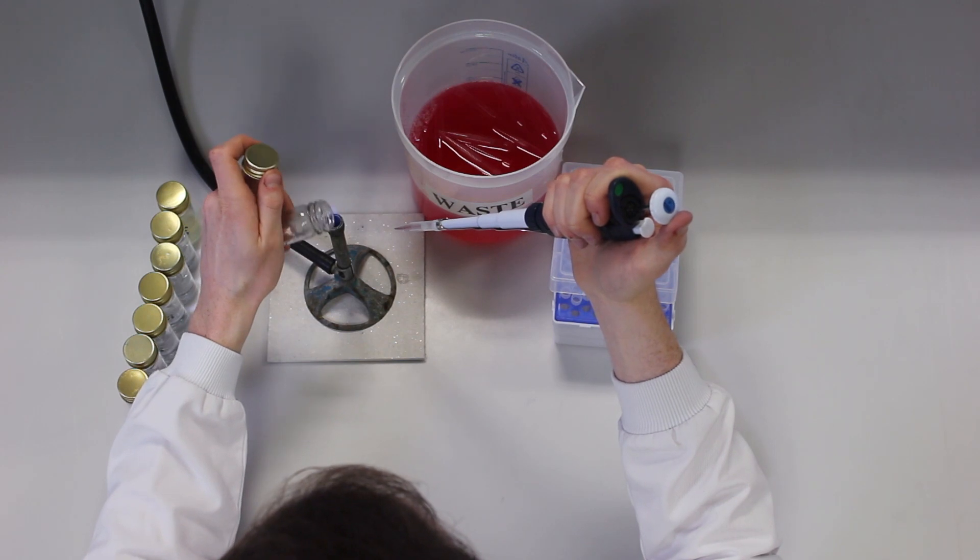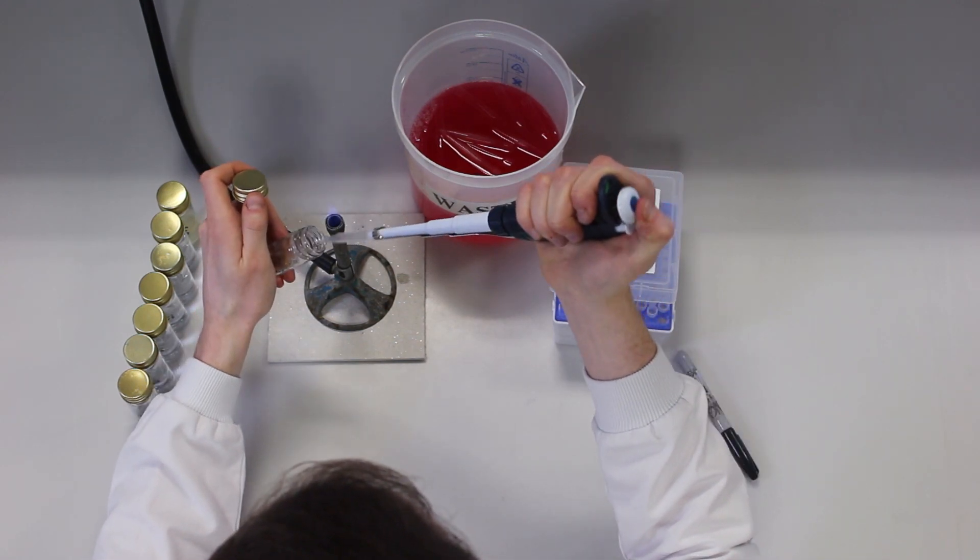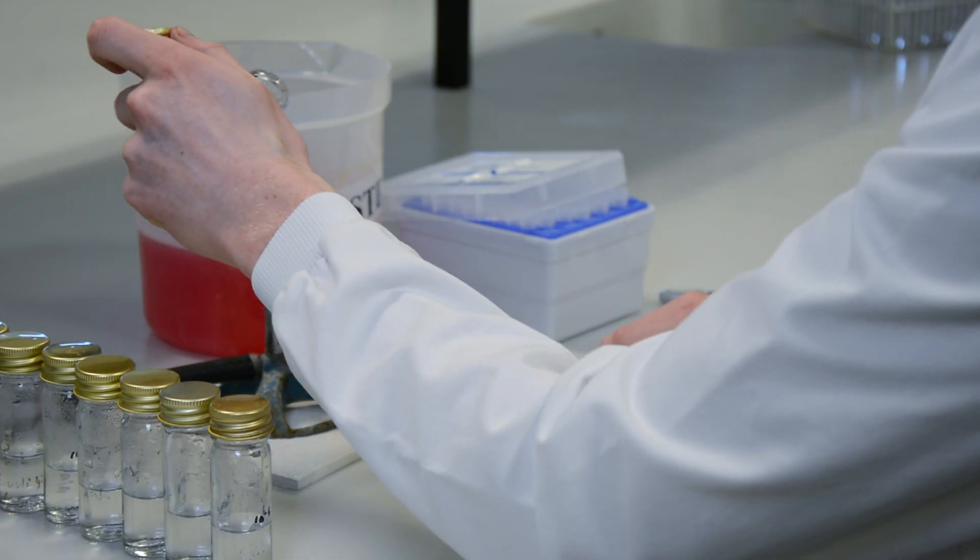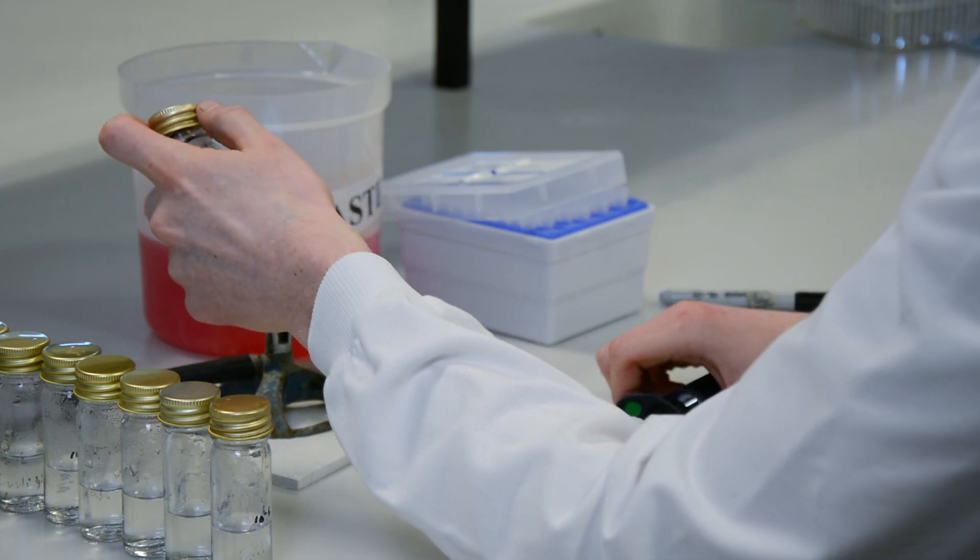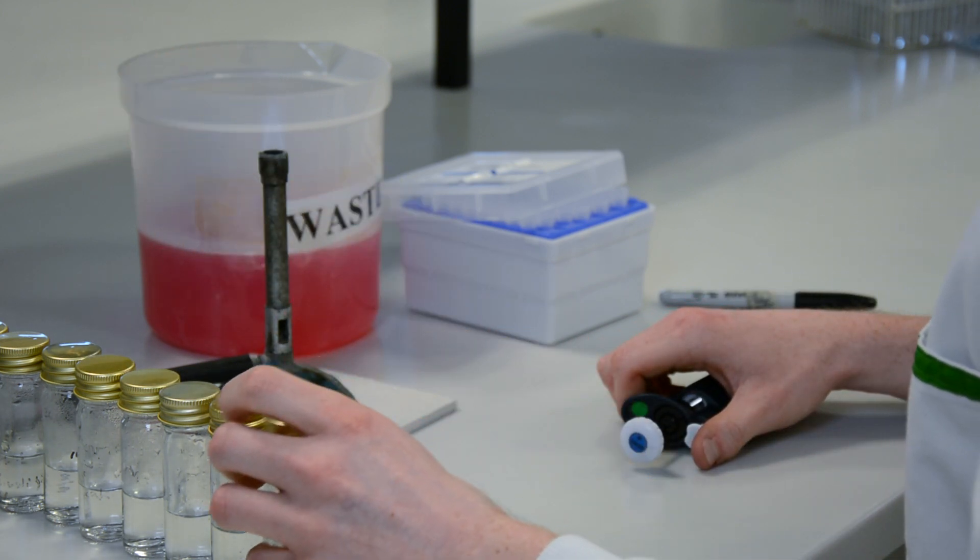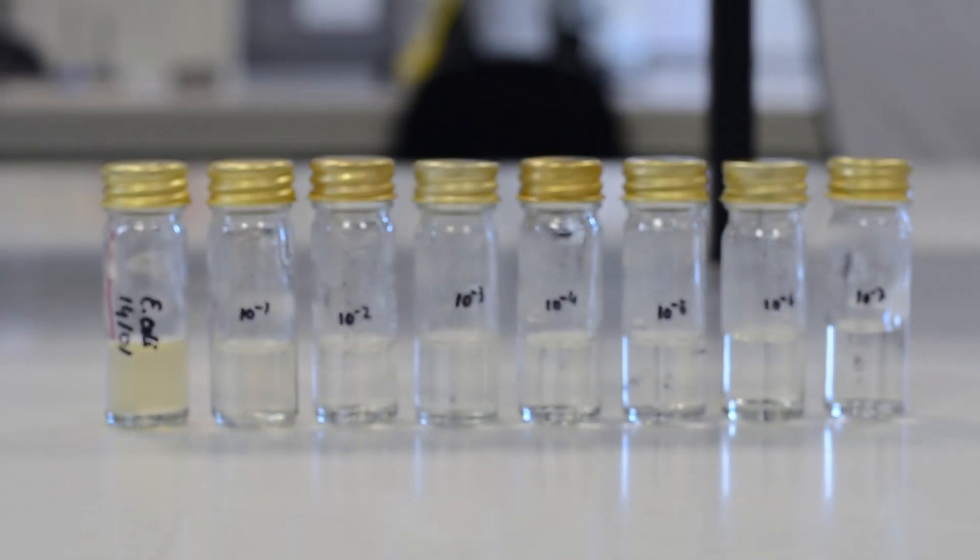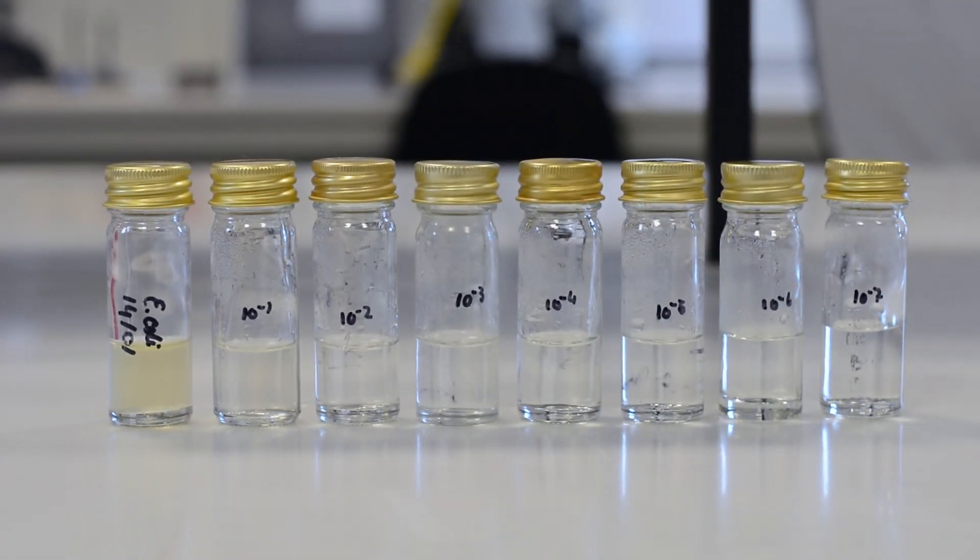Using aseptic technique throughout, remembering to flame the neck of each bottle both before and after each manipulation and dispose of your tip in the labeled waste pot. Your series of diluted cultures is now ready for plating out by spread plating or pour plating.